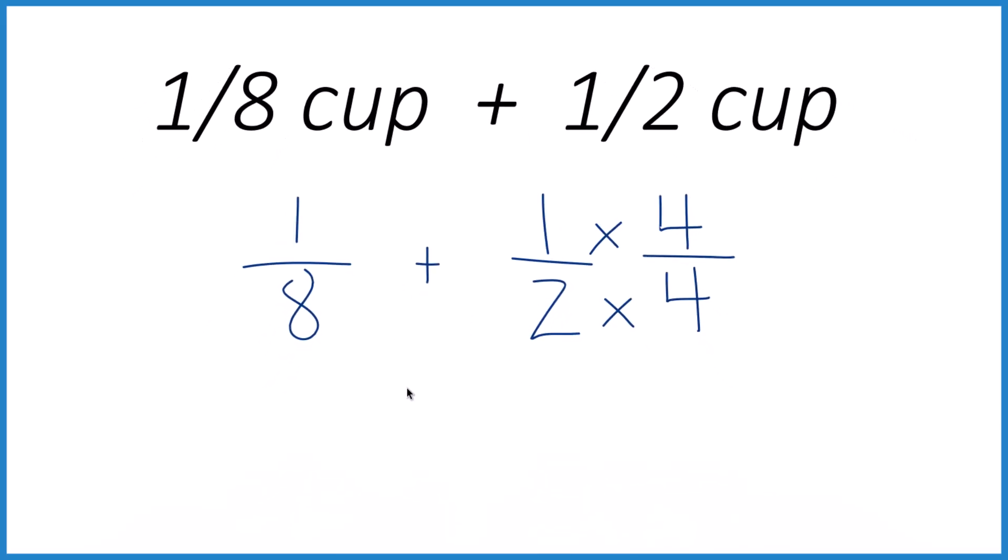So let's do this. We have our 1 eighth. That doesn't change. Plus 1 times 4 is 4. 2 times 4 is 8. And 4 eighths, that's the same as 1 half.